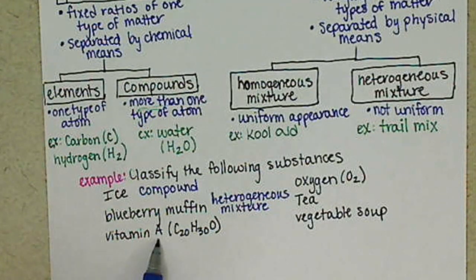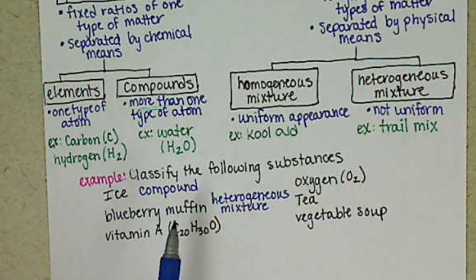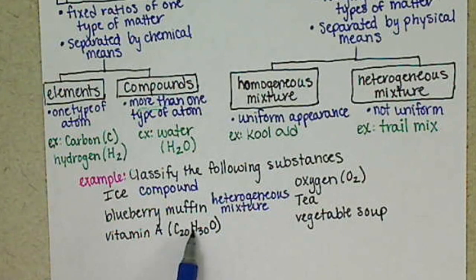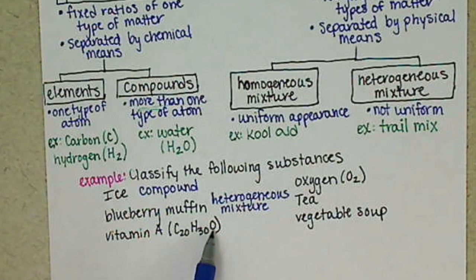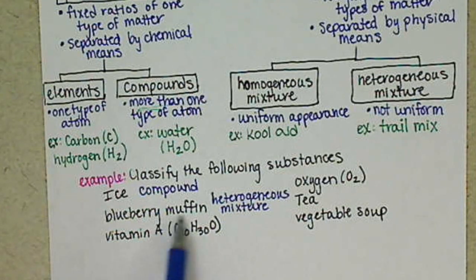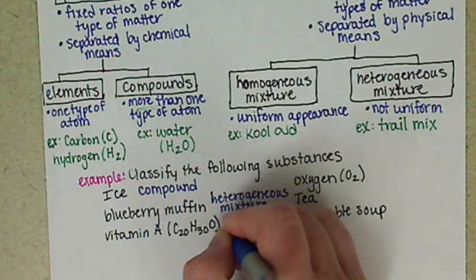Vitamin A. Any time that you guys see this type of thing here, this is called a chemical formula. So basically what it's saying is that we have a fixed ratio in vitamin A. We're going to have 20 carbon atoms for every 30 hydrogen atoms and one oxygen atom. So any time that we have a fixed ratio, if we see this chemical formula, that's going to tell us that we have a compound.